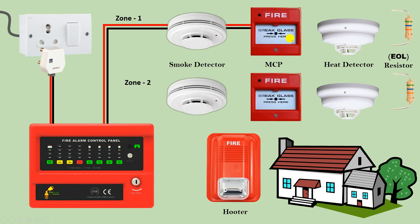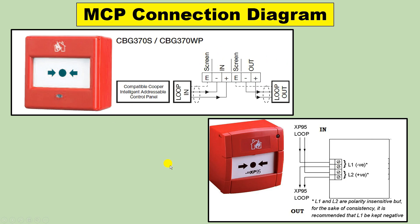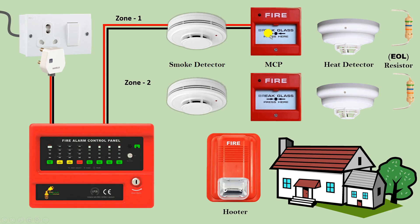After this, take the power supply from the previous detector and do the connection of the MCP. Behind the MCP the terminals work similarly — connect incoming negative to the negative terminal and loop outgoing negative to the next device; do the same for positive. Details are labeled on the terminals. So connection of the MCP is done.